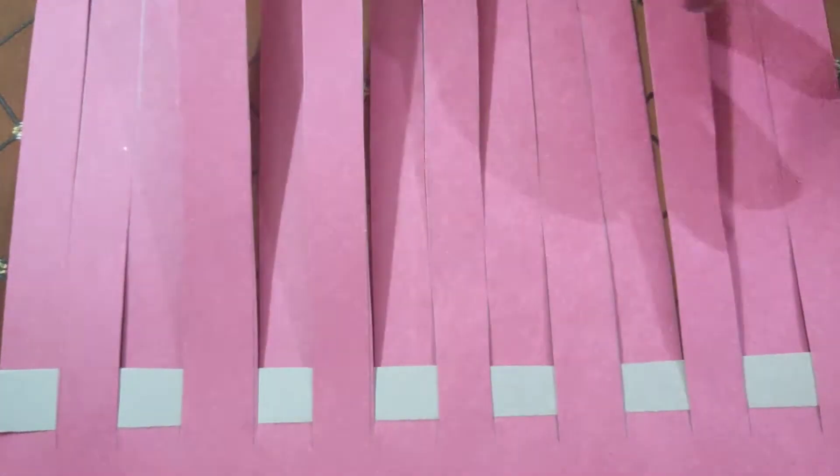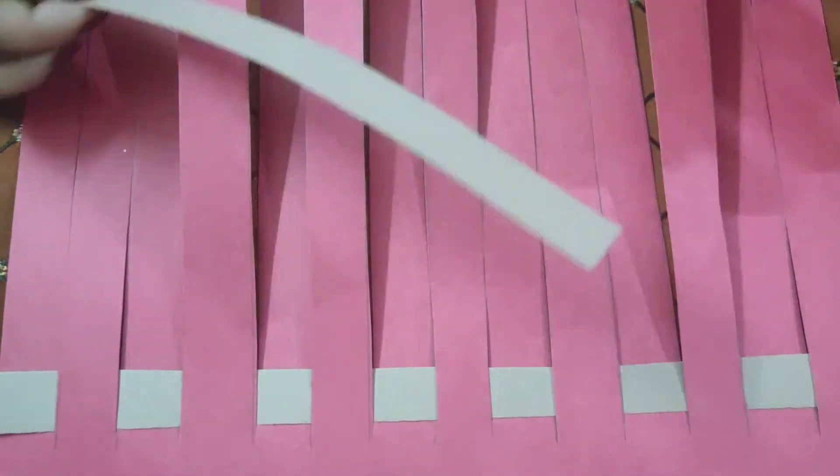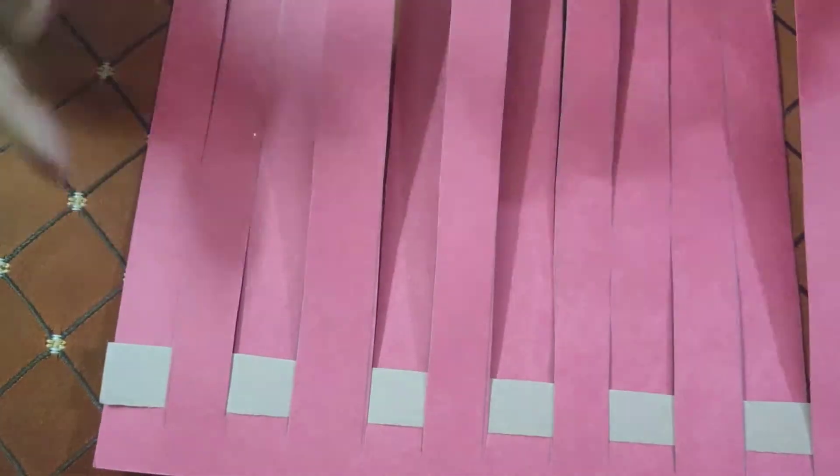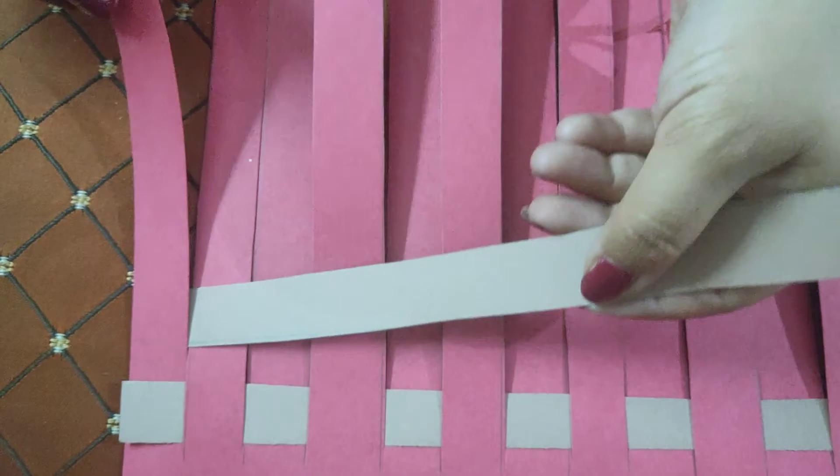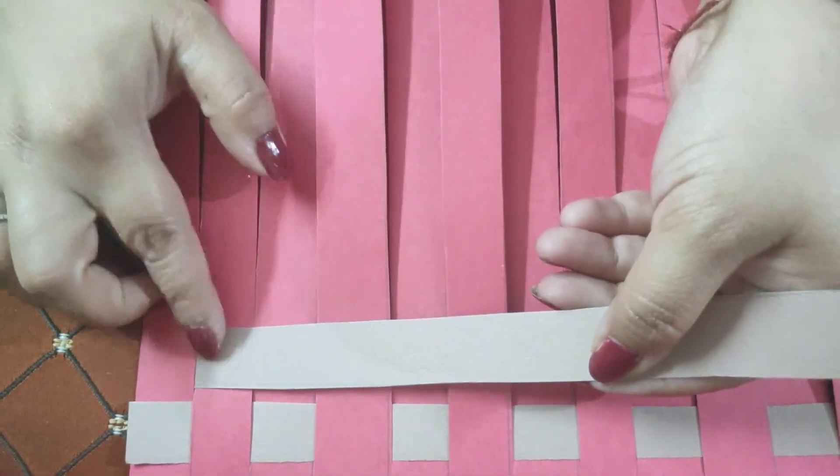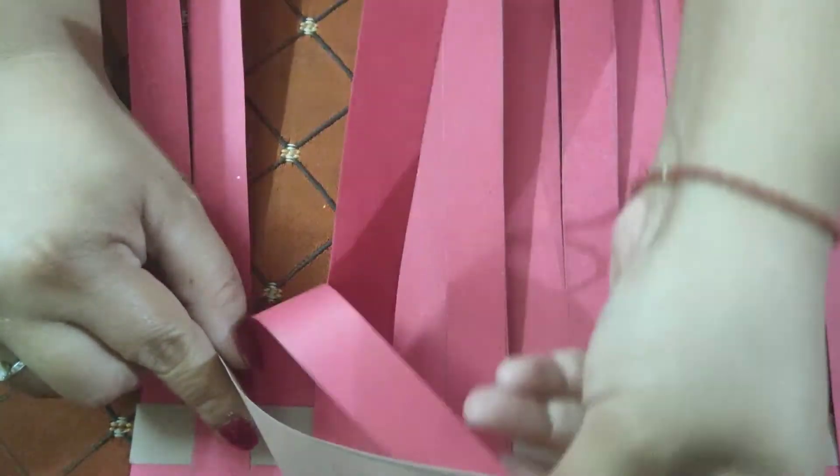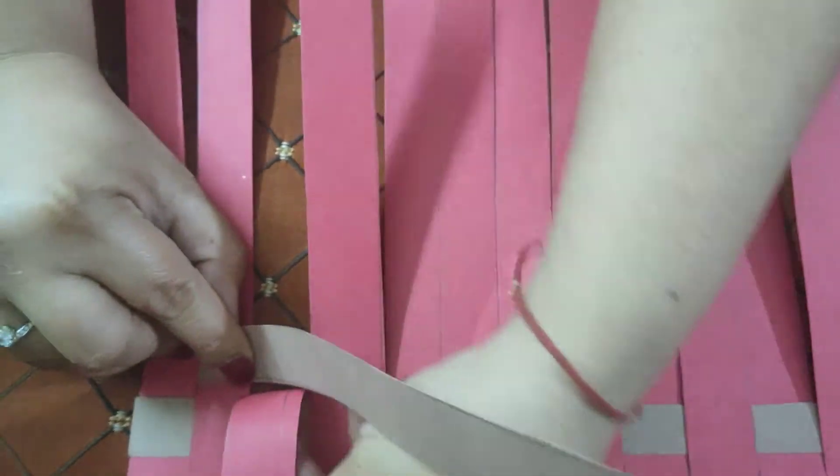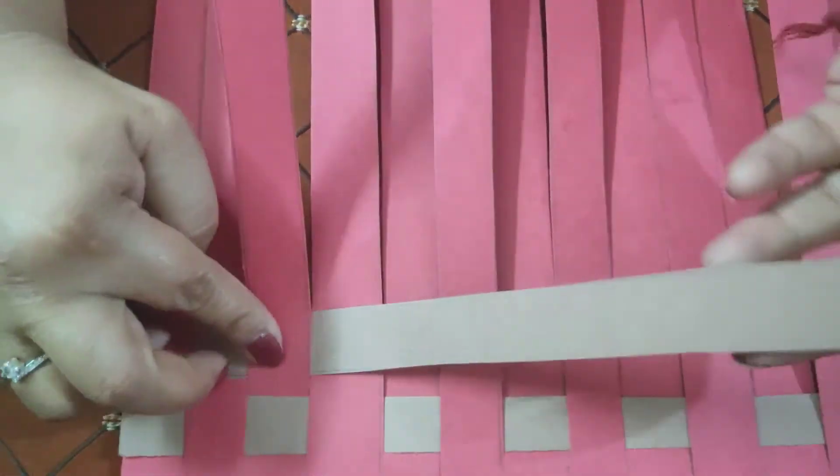Now we will take another strip and place it alternately. If the first strip is over the paper, then the next strip should be under the same strip. An alternate mat-like pattern will be formed.